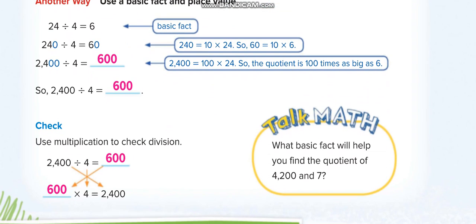How to check your answer? When you divide two numbers and get the answer, you want to check your answer, what do you do? You multiply the quotient, which is 600, with the divisor. Multiply it with the divisor. If you get the dividend, it means your answer is correct.